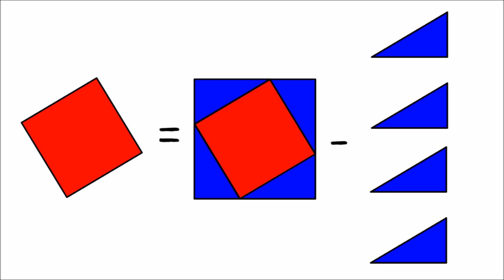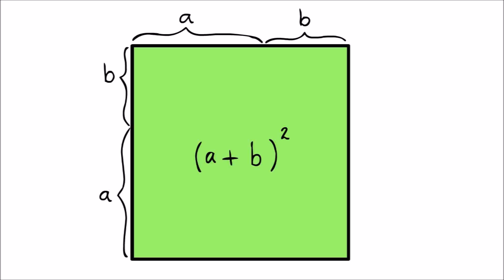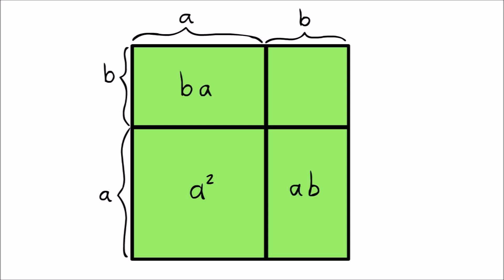What's the area of the big square? Well, its sides are length A plus B. So its area must be A plus B times A plus B. So let's see, that's A squared plus A times B plus B times A plus B squared. Let's simplify that a little bit. It's A squared plus 2AB plus B squared.